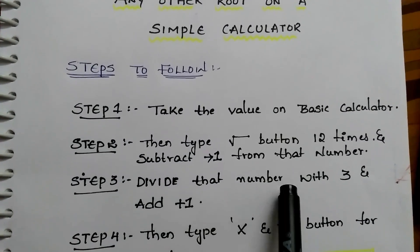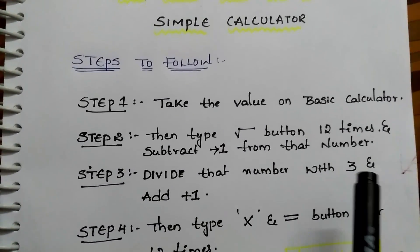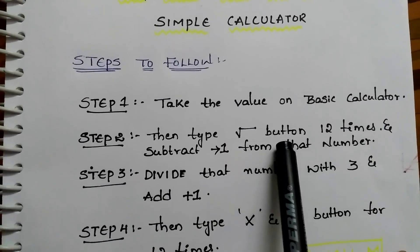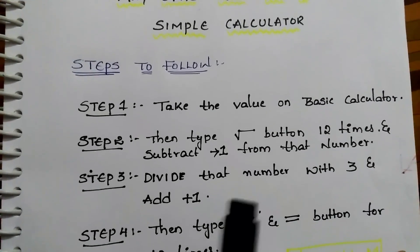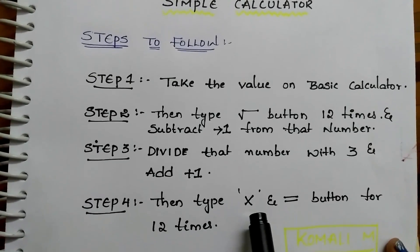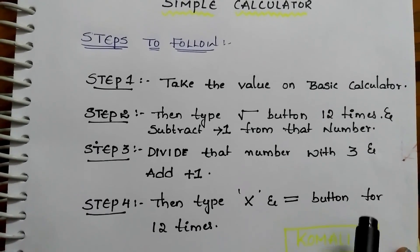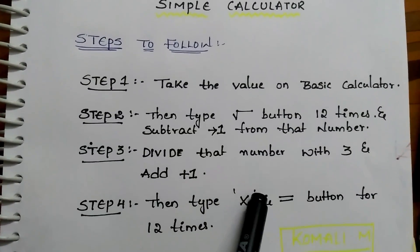Step 3: Divide that number with the root you want. Suppose if you want to find the cube root, divide that number with 3 and add 1 to that number. Step 4: Finally press multiply button and equal to button for 12 times. That's it, you will get the value of cube root.